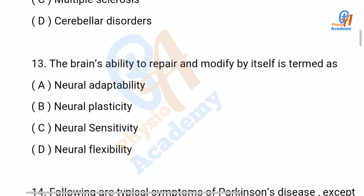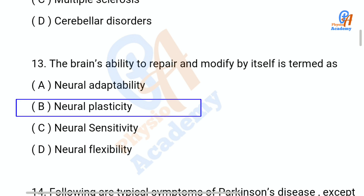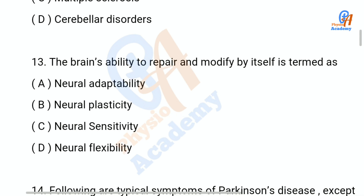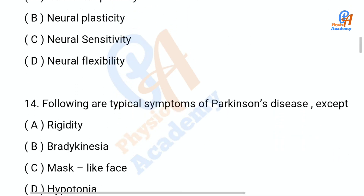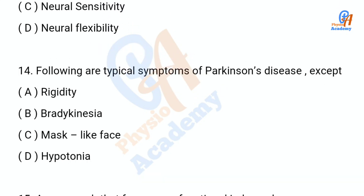Question number 13: The brain's ability to repair and modify by itself is termed as — option A: neural adaptability, option B: neural plasticity, option C: neural sensitivity, option D: neural flexibility. The correct answer is option B: neural plasticity.